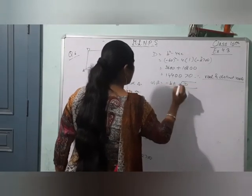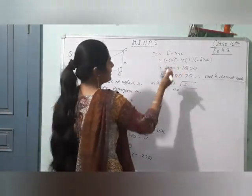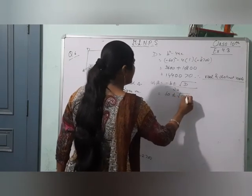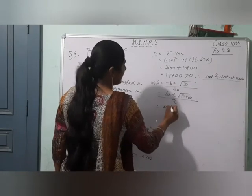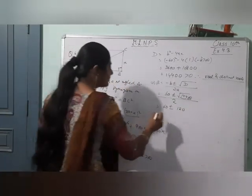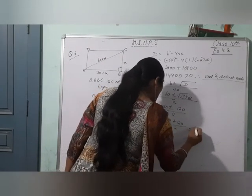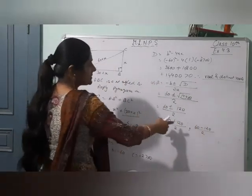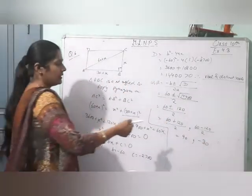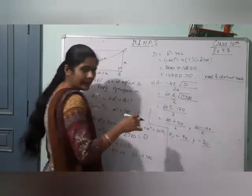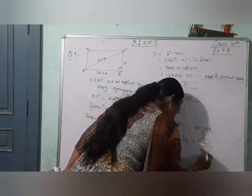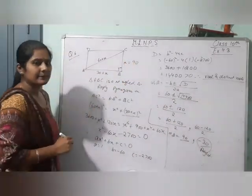Alpha and beta: x equals minus B plus minus under root D, divided by 2A. Minus of minus 60 gives plus 60, under root D. Under root of 14400 — note 120 squared is 14400, so root D equals 120. So x equals 60 plus 120 by 2, or 60 minus 120 by 2. You are getting 180 by 2, that is 90, and minus 60 by 2, that is minus 30.